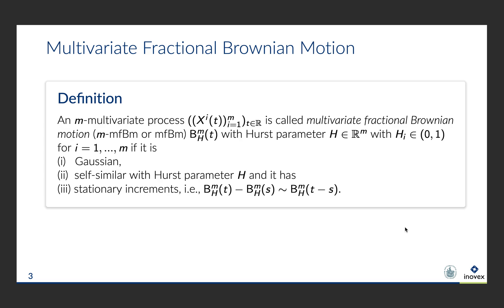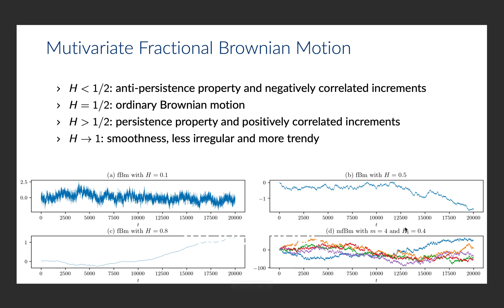As the name might suggest, the FBM generalizes the well-known Brownian motion. For m equal to 1, the definition matches the univariate FBM. In case h is less than a half, the process has negatively correlated increments and an antipersistent property, as shown top left in the figure. In case h is equal to half, FBM corresponds to the ordinary Brownian motion, as shown top right in the figure. In case h is greater than a half, the process has a persistence property and positively correlated increments.